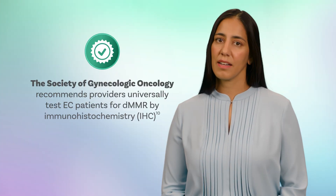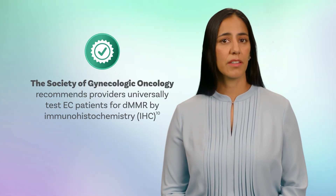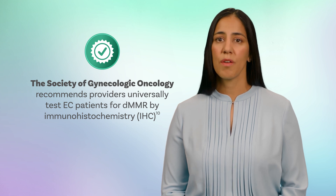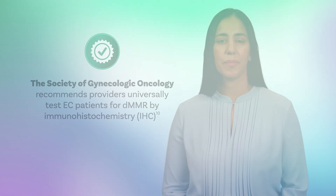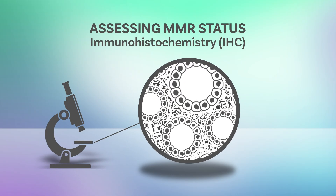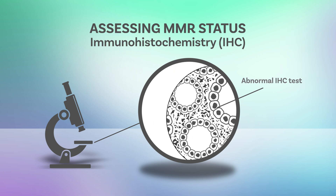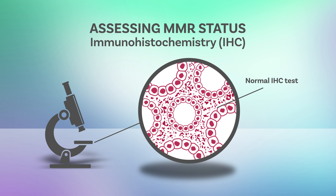The Society of Gynecologic Oncology recommends providers universally test endometrial cancer patients for dMMR by immunohistochemistry or IHC. This technique allows us to visualize the loss of expression of proteins involved in MMR from a tissue sample taken from a patient. An abnormal IHC test shows that at least one of the MMR proteins is not detected. In contrast, normal healthy tissue exhibits normal staining, indicating that the MMR proteins are intact and detected.